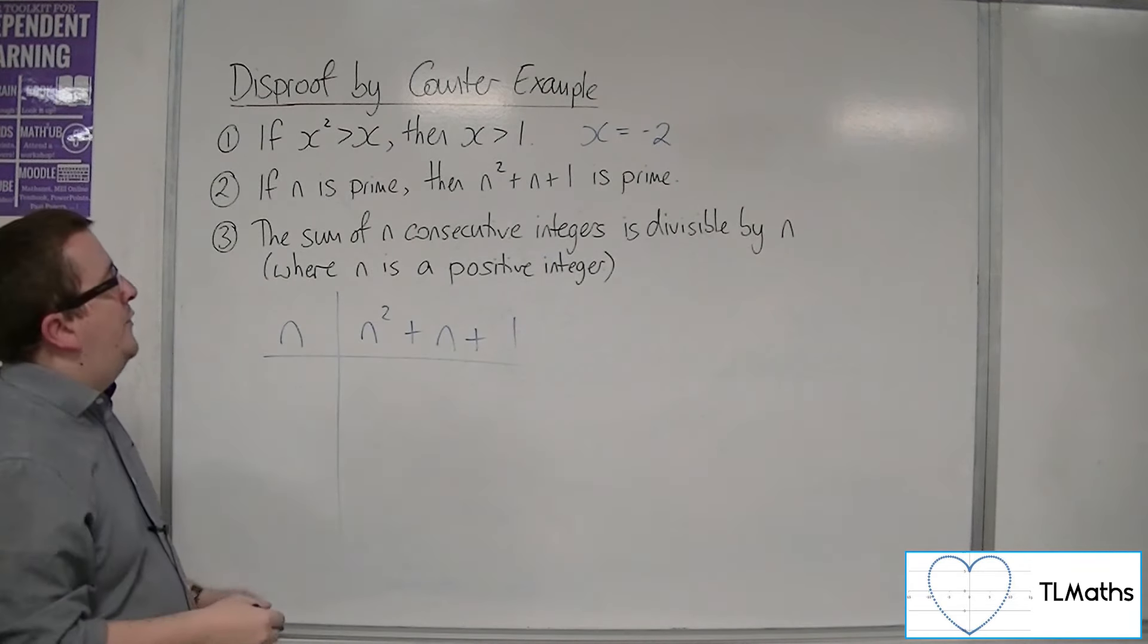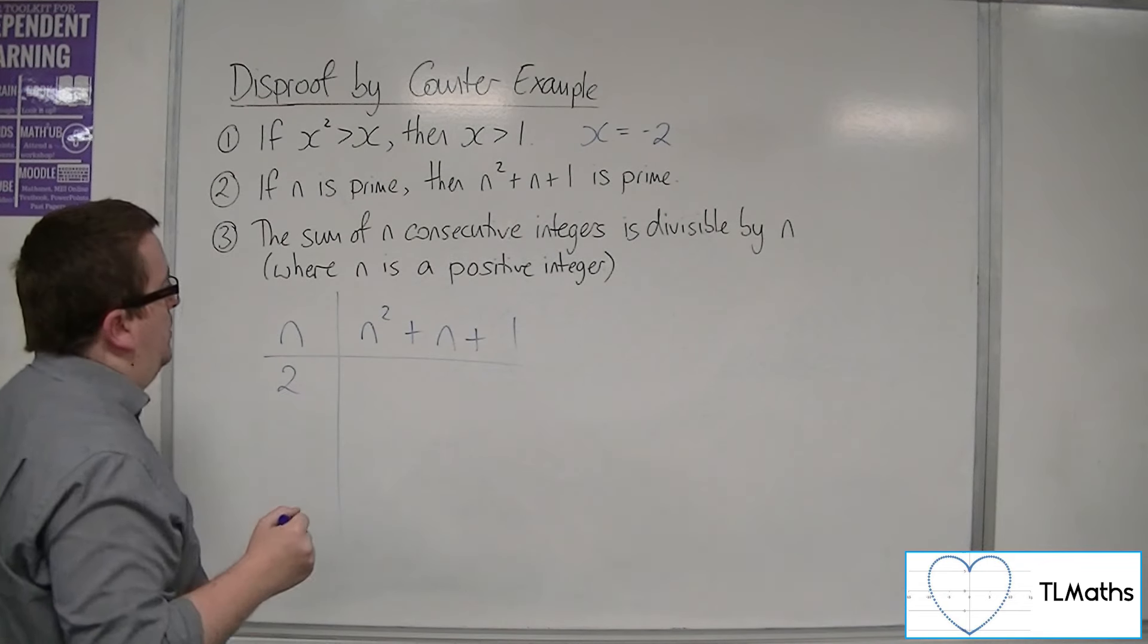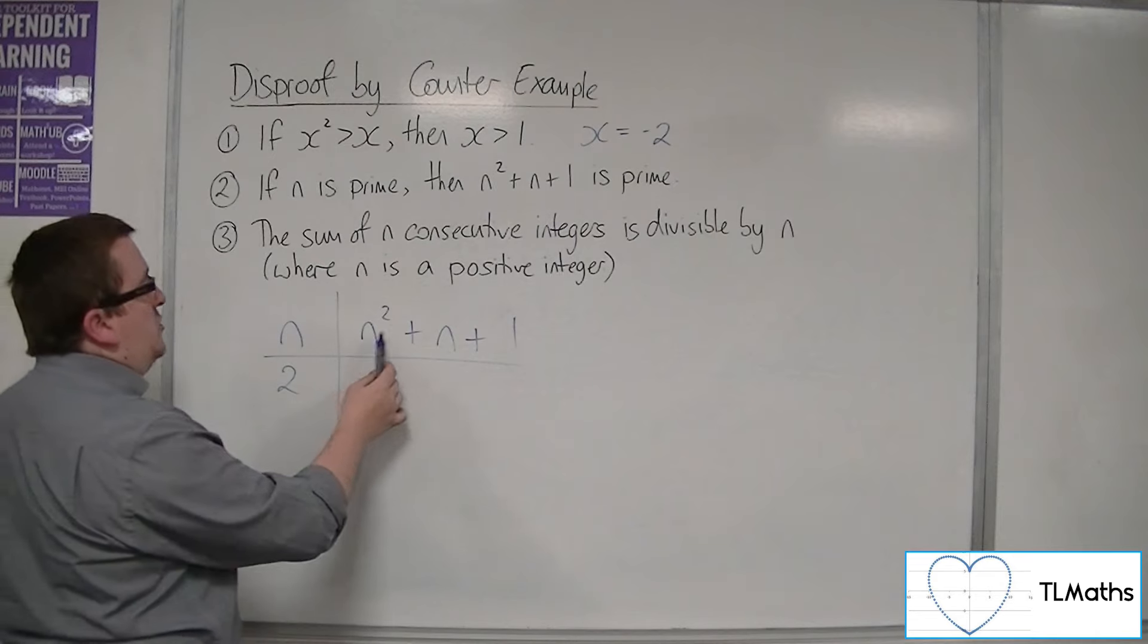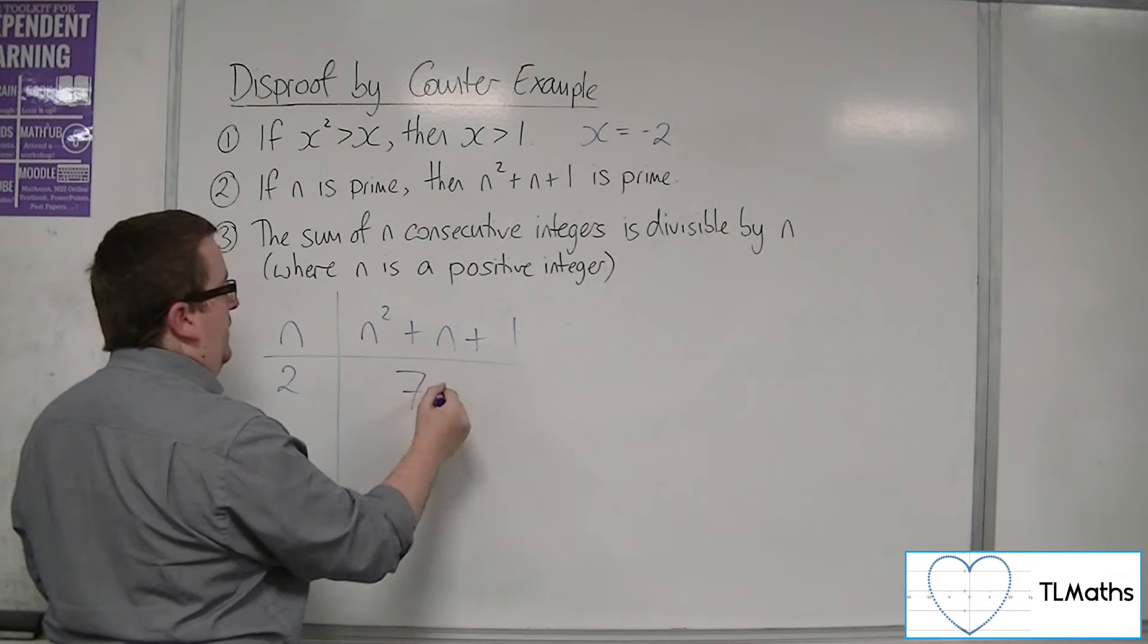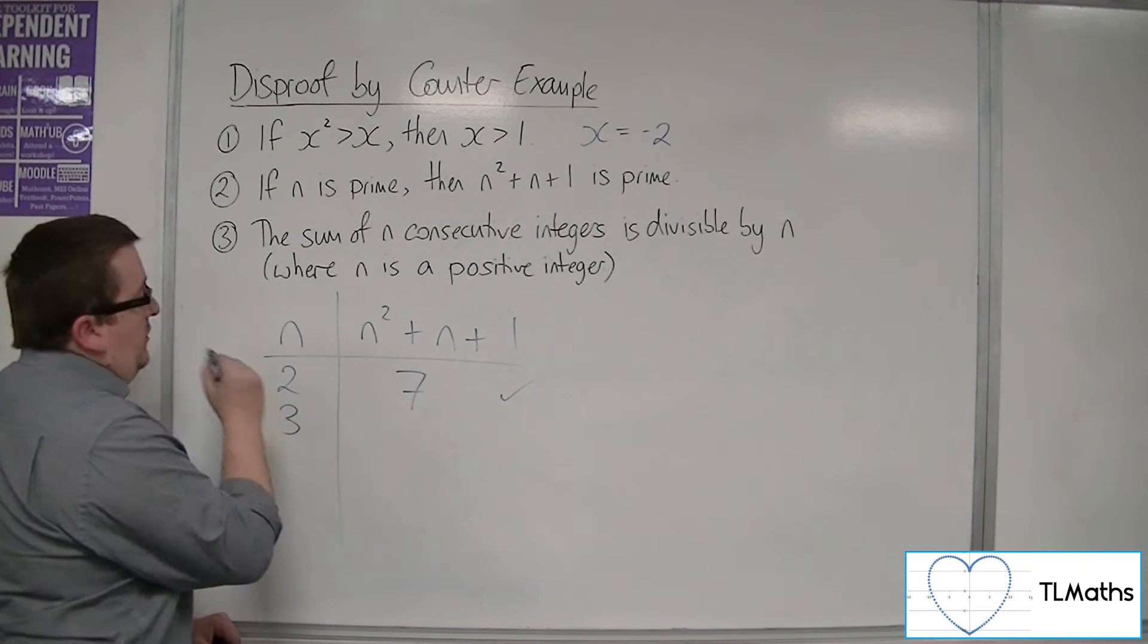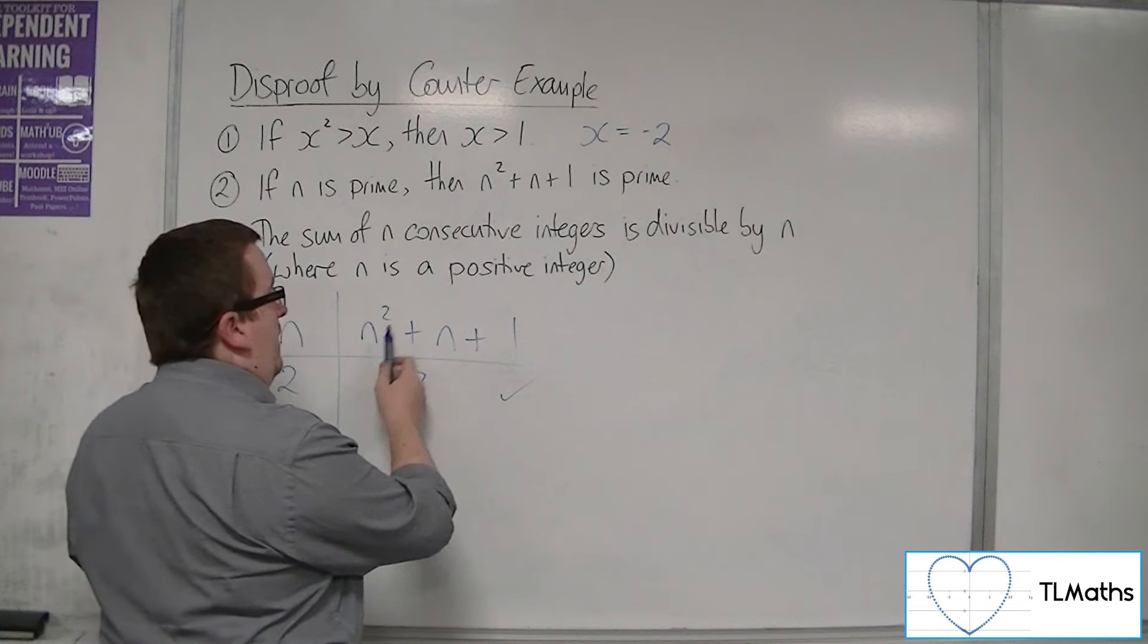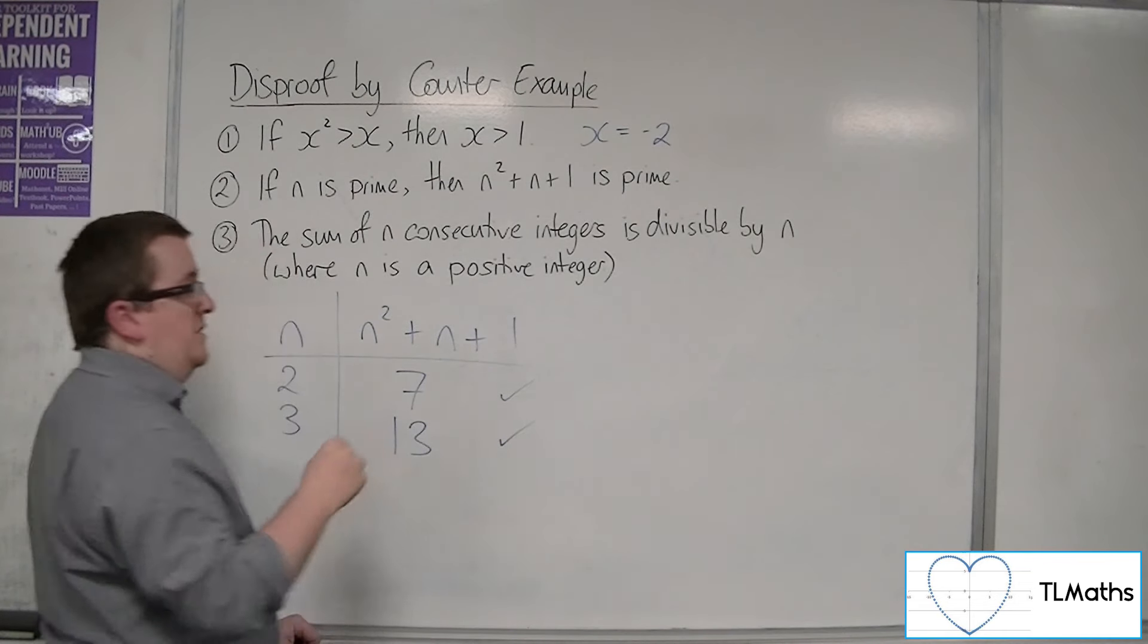So if we try some values of n. n, remember, has to be prime. So if we try n is 2, we get 2 squared plus 2 plus 1. So 4, 6, 7. 7's prime. So it works there. If n is 3, we get 9, 12, 13. 13 is prime. So that's okay.